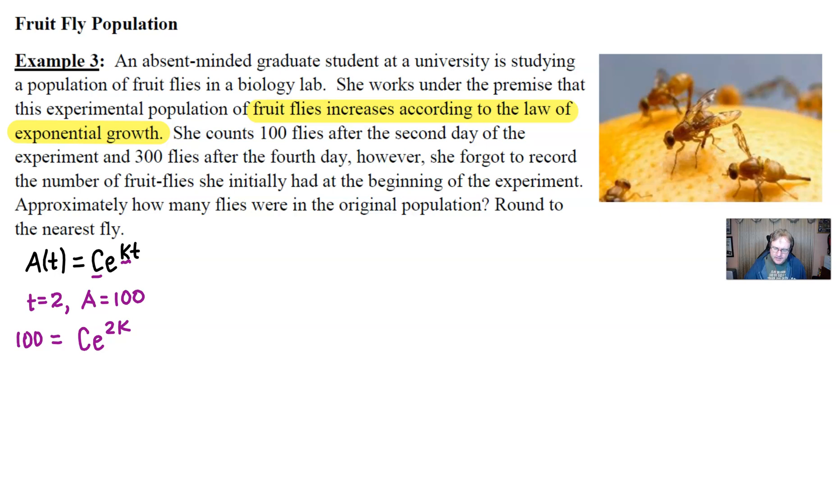Because if you continue to read through the problem, it mentions that she did her job and counted the number of flies after the fourth day. So when time is 4, the number of flies is up to 300. And so we could plug those into this very same equation and we get something that looks pretty similar, albeit still with a c and a k.